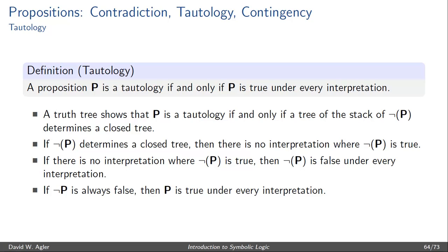If we know that P is true under every interpretation, then we know that P is a tautology. So in order to test a proposition P to see if it's a tautology, we simply begin the tree with negation P. And if it determines a closed tree, then we know that P is a tautology.